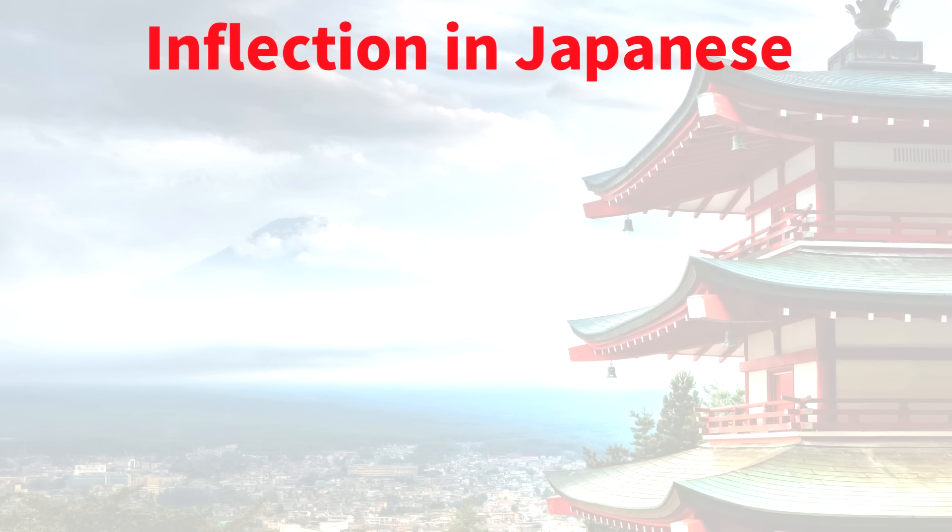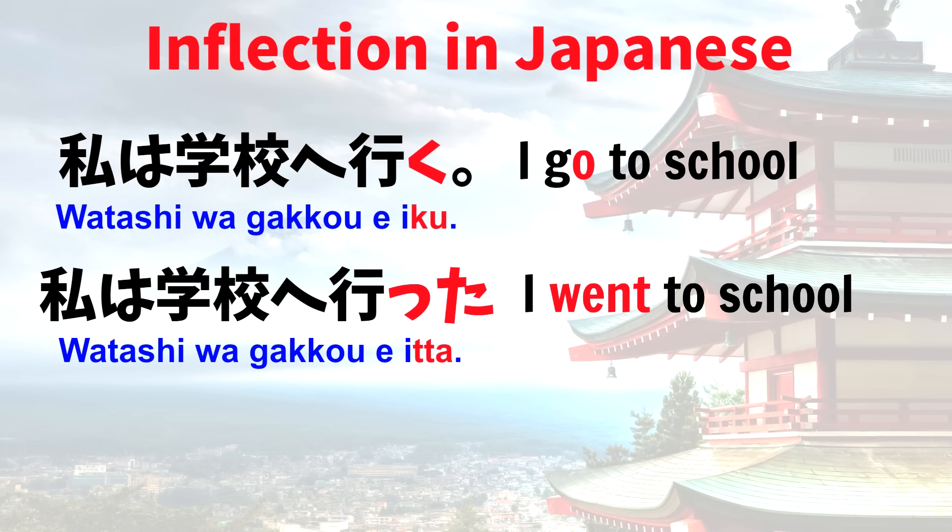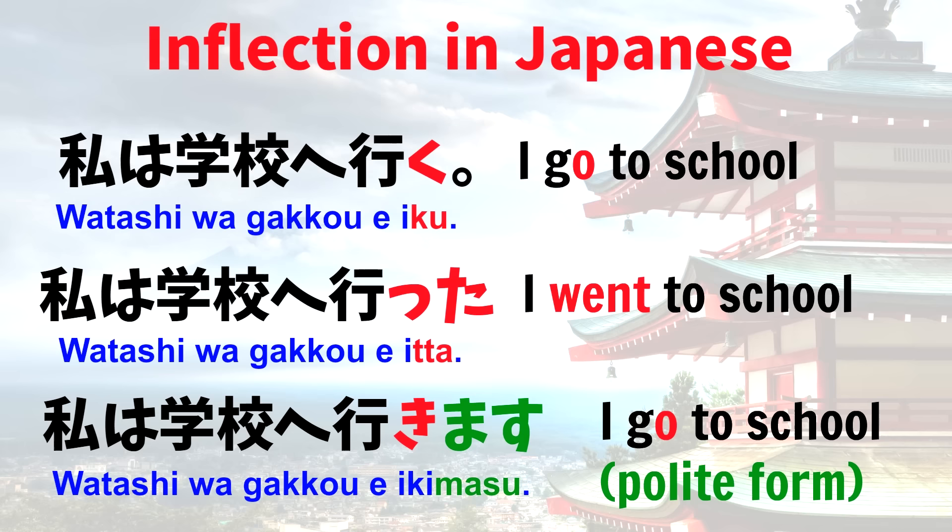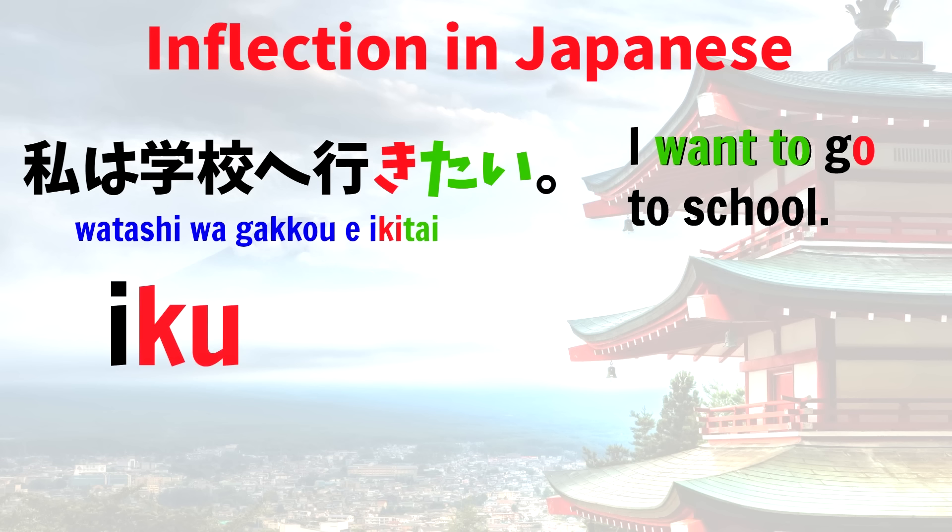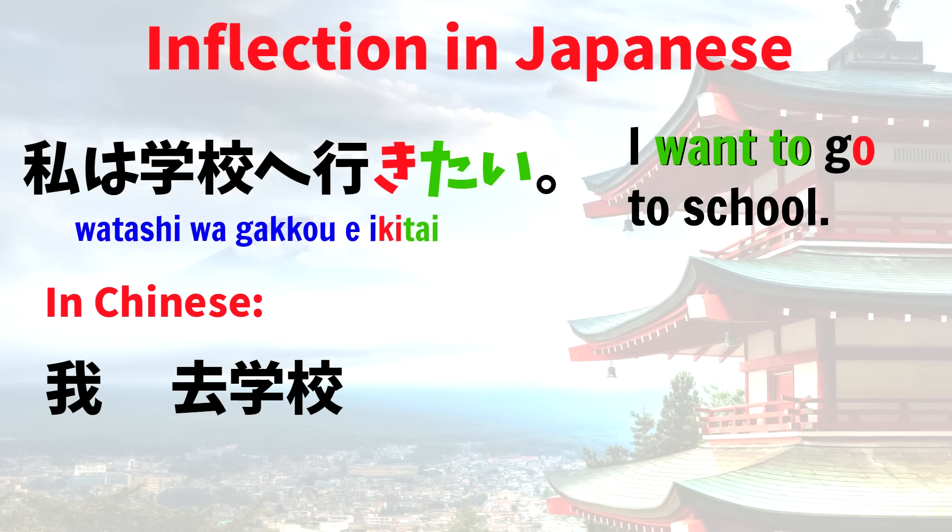Now these similar sentences in Japanese show inflection. This sentence means I go to school: 私は学校へ行く. I went to school: 私は学校へ行った. And the polite form of I go to school: 私は学校へ行きます. I want to go to school: 私は学校へ行きたい. In Chinese though, there's no inflection or agglutination. You just add an extra word like this.